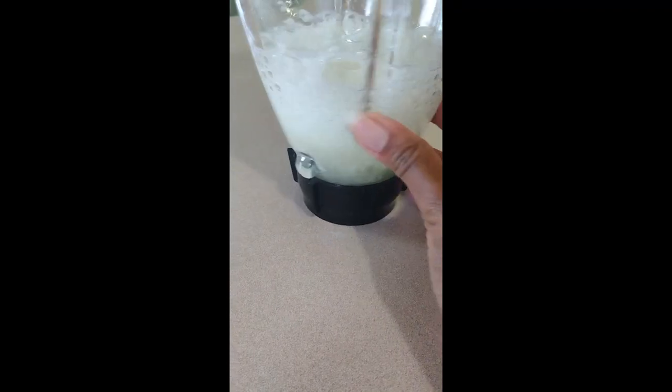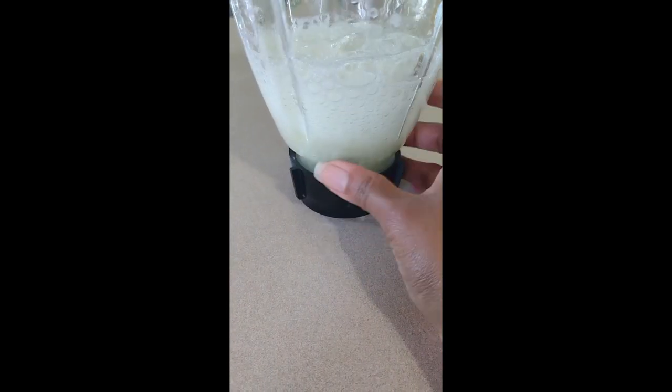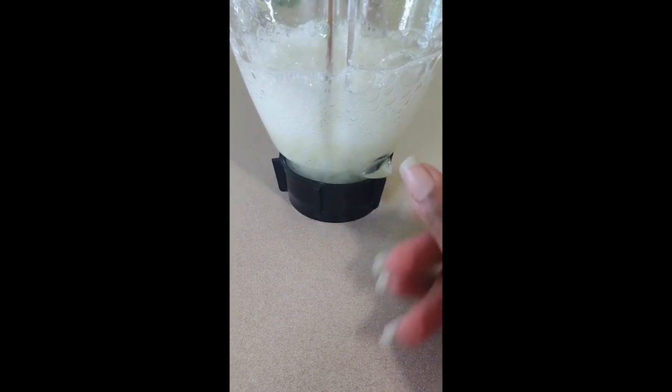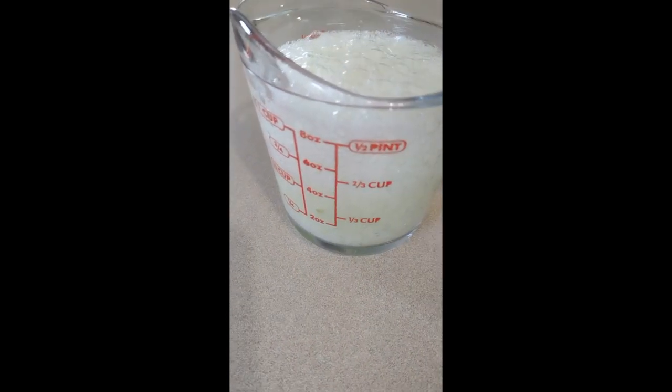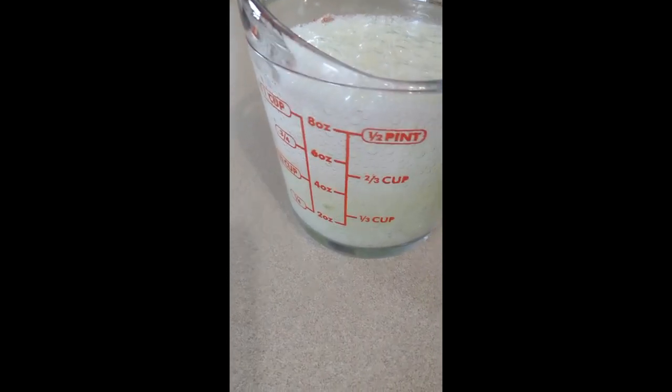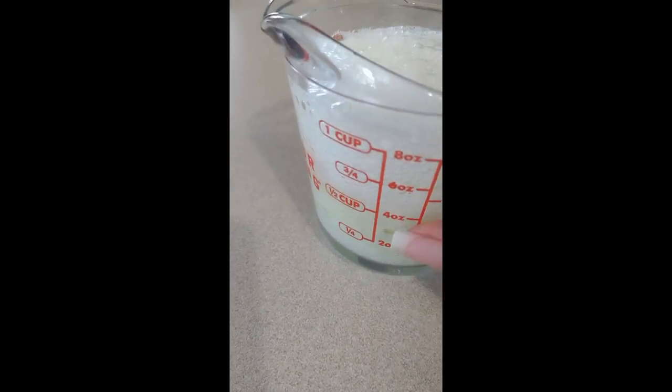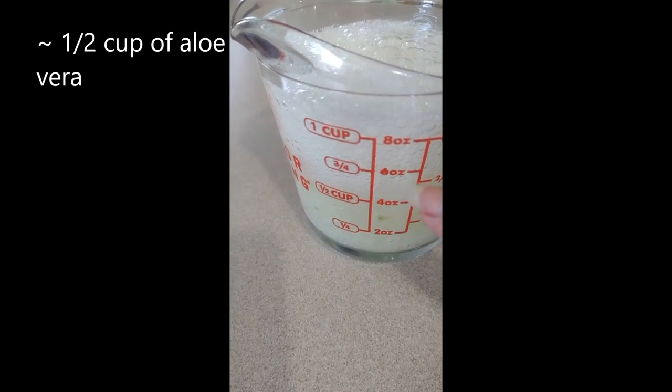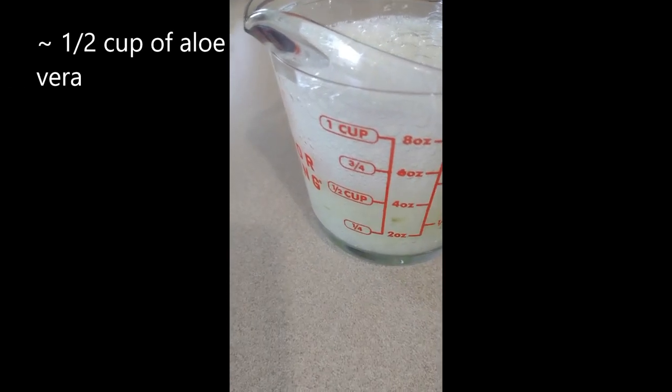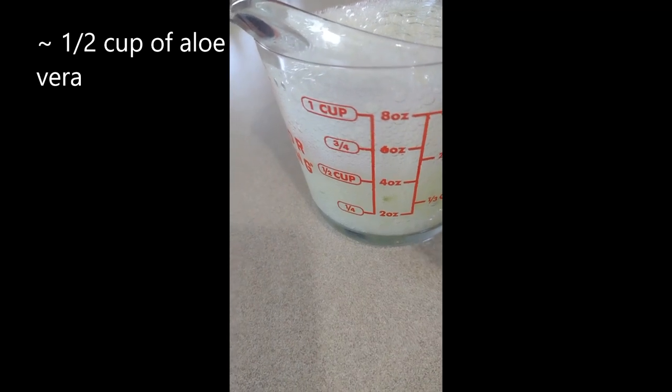So I blended it up and now I'm going to pour this into my measuring cup. Alright, so what I have here is about a half a cup of aloe vera juice, whatever.